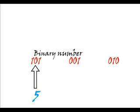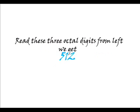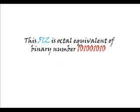The third group is 1 0 1, whose octal equivalent is 5. Now if we read these 3 octal digits from left, we get 5 1 2. And this 5 1 2 is the octal equivalent of binary number 1 0 1 0 0 1 0 1 0.